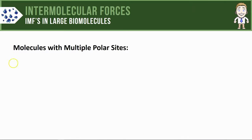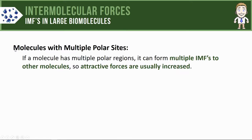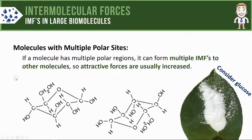Let's start by looking at large molecules that have multiple regions considered polar. If your molecule has multiple polar regions, it can form multiple intermolecular forces to other molecules. As a result, the attractive forces between molecules like this tend to be increased.